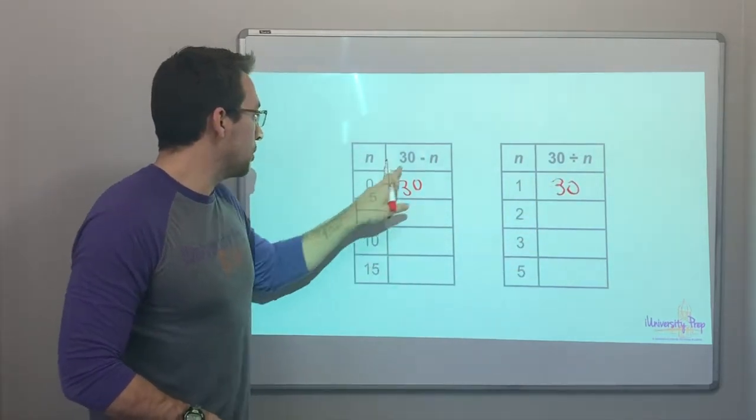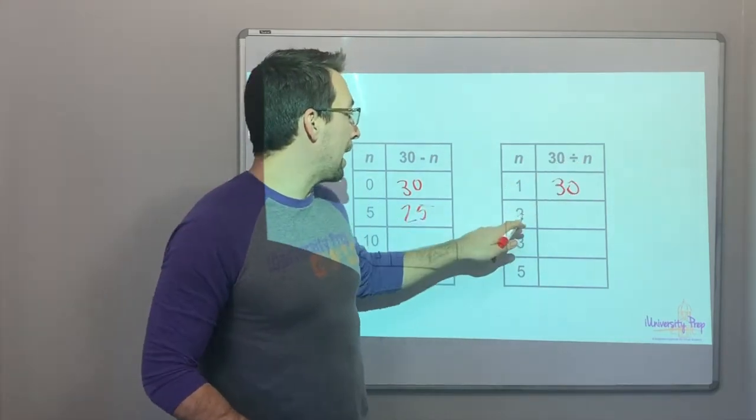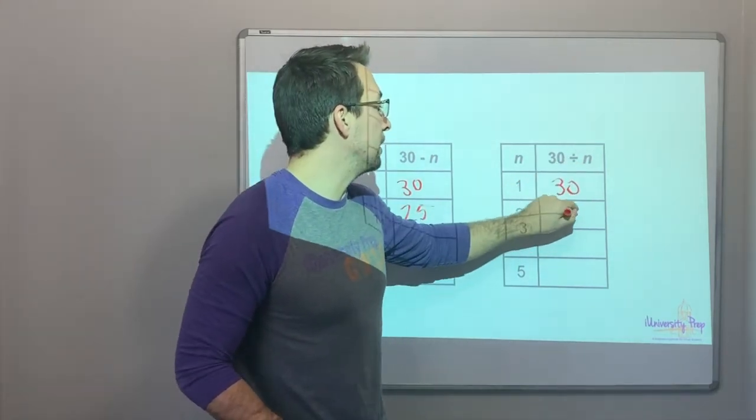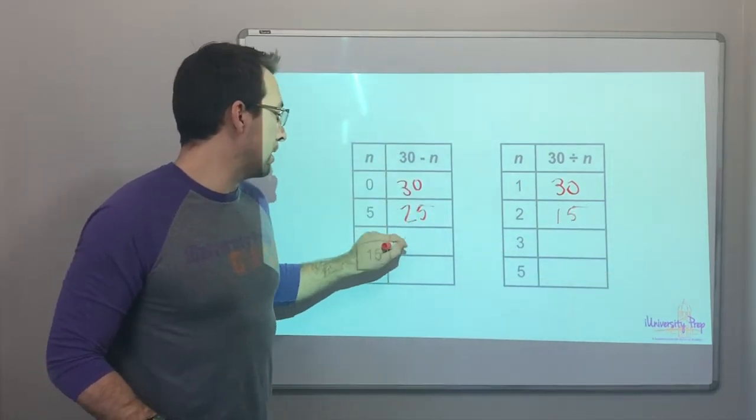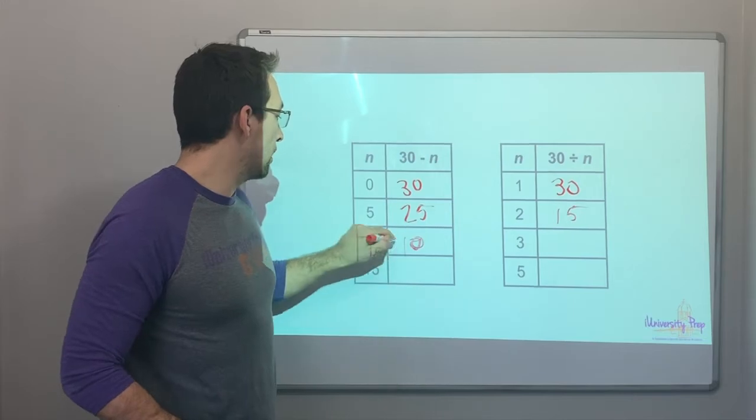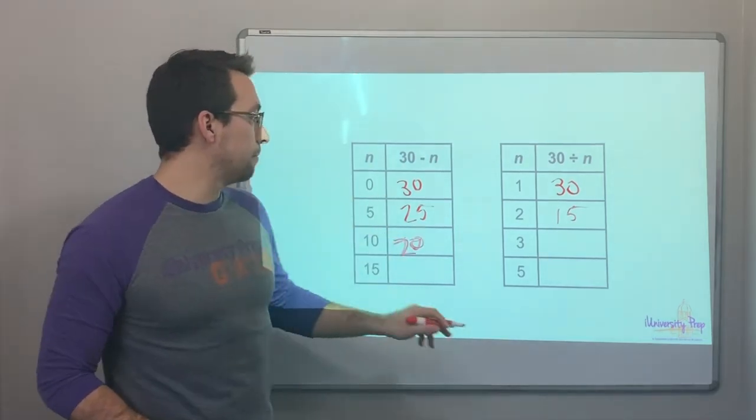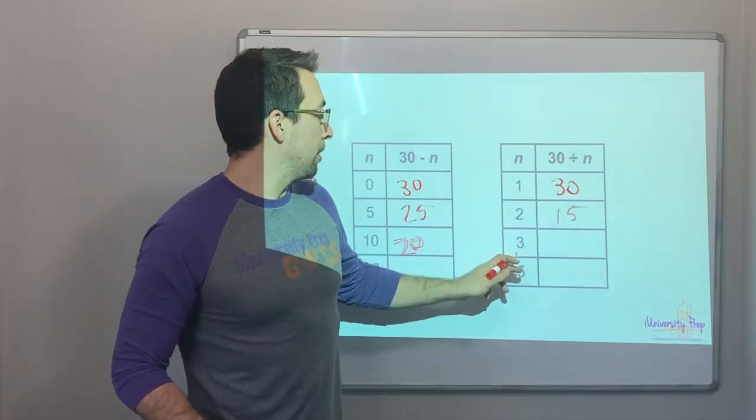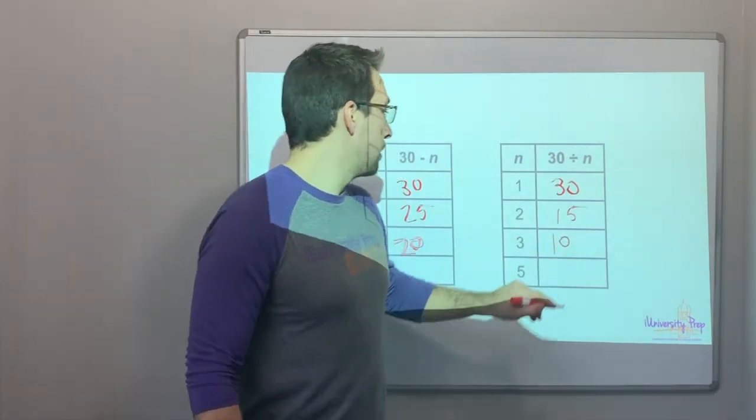So thirty minus five is twenty-five. Thirty divided by two is fifteen. Thirty minus ten is twenty. Not ten. Thirty minus ten is twenty. Thirty divided by three. Well, three times ten is thirty.